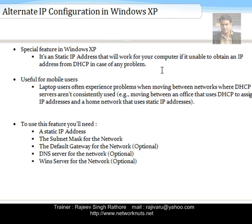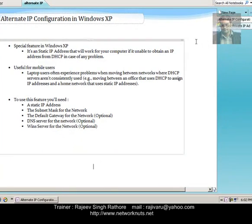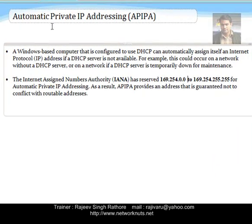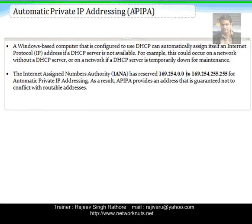So if my system is configured to obtain an IP address from the DHCP server and DHCP is not available at that particular moment, in that case my system will obtain an IP address from the APIPA range. Now what is the meaning of this APIPA range? Let me explain — APIPA stands for Automatic Private IP Addressing.